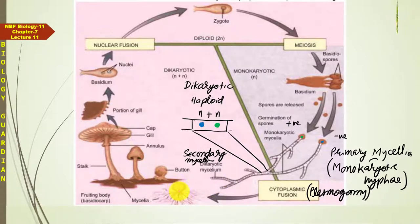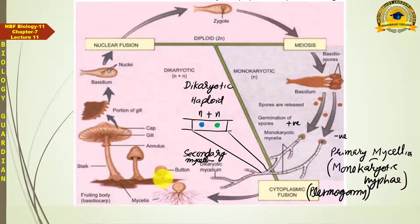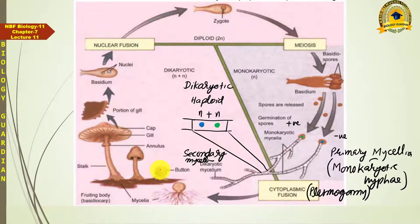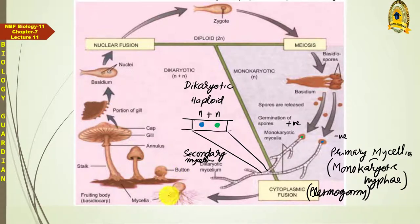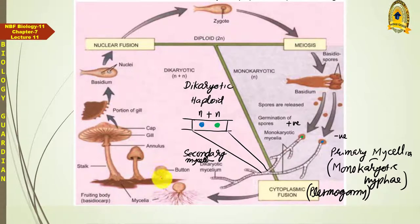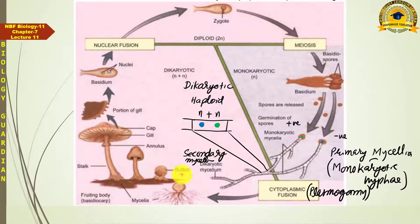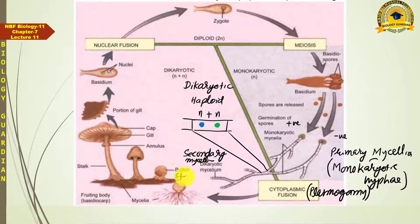When these hyphae grow out from the ground, first a swollen, ball-like structure appears above the soil — although the entire diakaryotic mycelium remains below. This stage, when a ball-like structure projects out from the soil, is called the button stage.